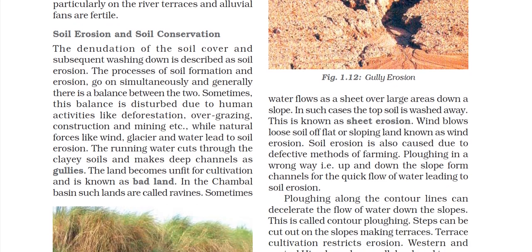Next is soil erosion and soil conservation. The denudation of the soil cover and subsequent washing down is described as soil erosion. Generally there is a balance between soil formation and soil erosion — we never see soil completely eroded. The two processes are simultaneously working. However, the balance is disturbed by human activities such as deforestation, overgrazing, construction, and mining.